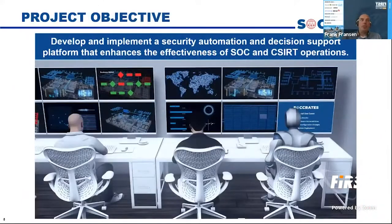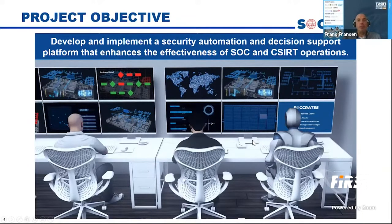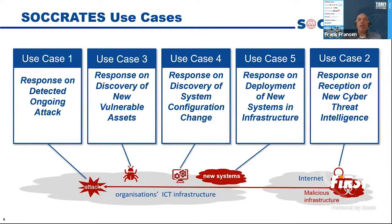The project objective is to develop and implement a security automation and decision support platform that enhances the effectiveness of SOC and CSIRT operations. As you can see from the picture, it's not the intention to take the human out of the SOC, but we want to add more automation to enable them to make more informed decisions — decisions on what is going on, but also decisions on what the options for response are. We identified five use cases for which we want to come up with analysis and responses. The first is ongoing attacks: we detect an attack, assess what's going on, what is the threat, what is the impact, what are the ways to contain the incident, and then we provide that to the SOC and CSIRT analysts, and they can choose to activate our suggested response.